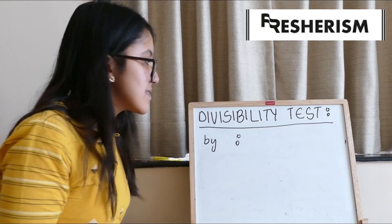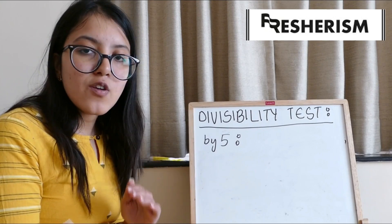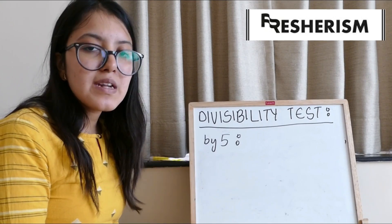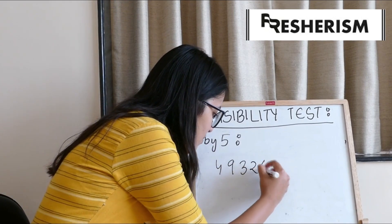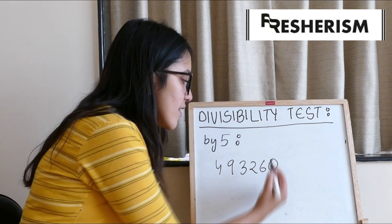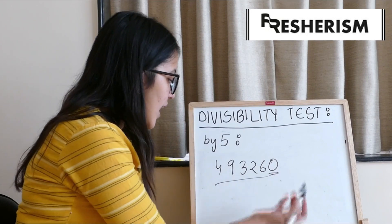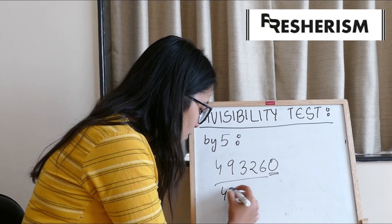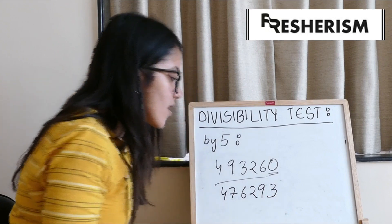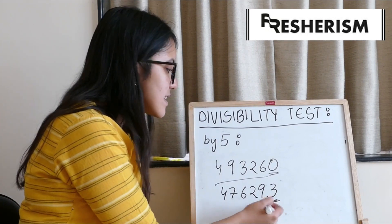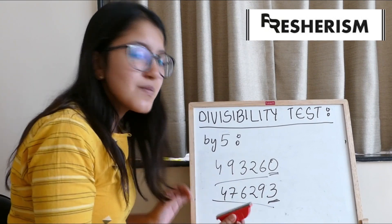Moving on to our next list, which will be divisibility by 5. Any number which has 0 or 5 at its units place will be divisible by 5 completely. For example, 493,260 — here, at units place we have 0, hence this number is completely divisible by 5. Another example: 476,293 — at its units place it does not have 0 or 5, hence it is not divisible by 5. As simple as that, guys.